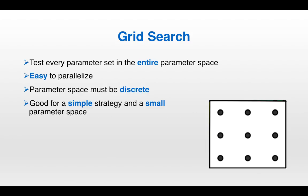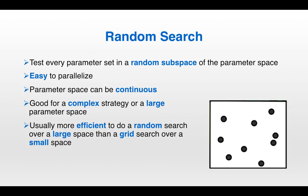For a grid search, the parameter space needs to be discrete — because if it were continuous, you'd have an infinite number of parameter sets to evaluate, and that's not possible. Grid searches are good for a simple strategy and a small parameter space. If it is feasible to do a grid search, you're going to want to do one, because by evaluating every single parameter set, it's truly painting the full picture.